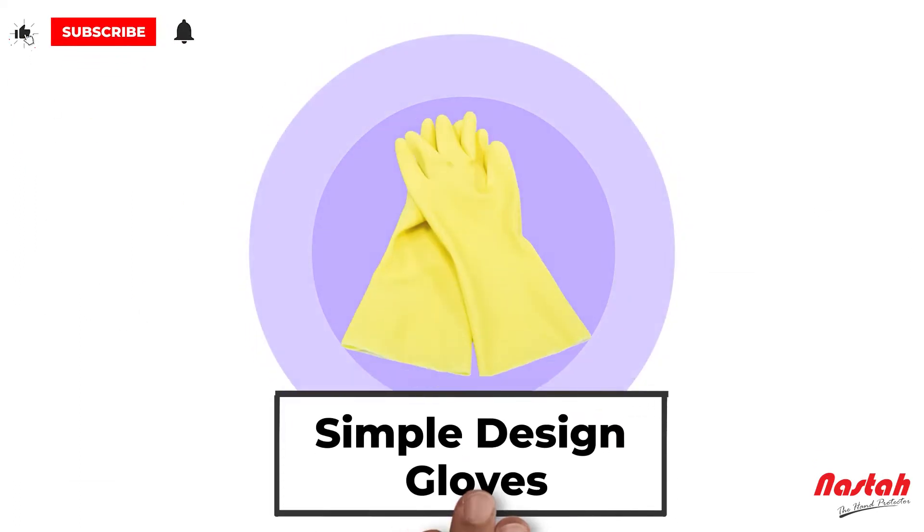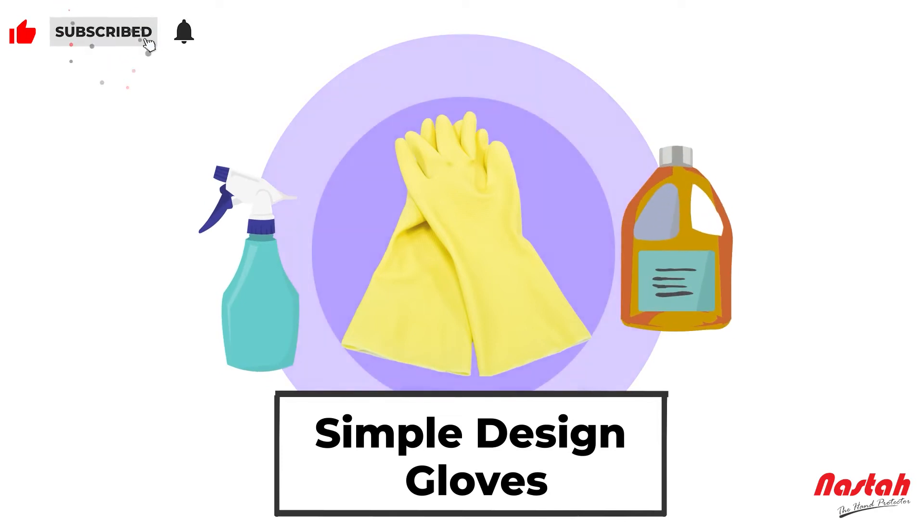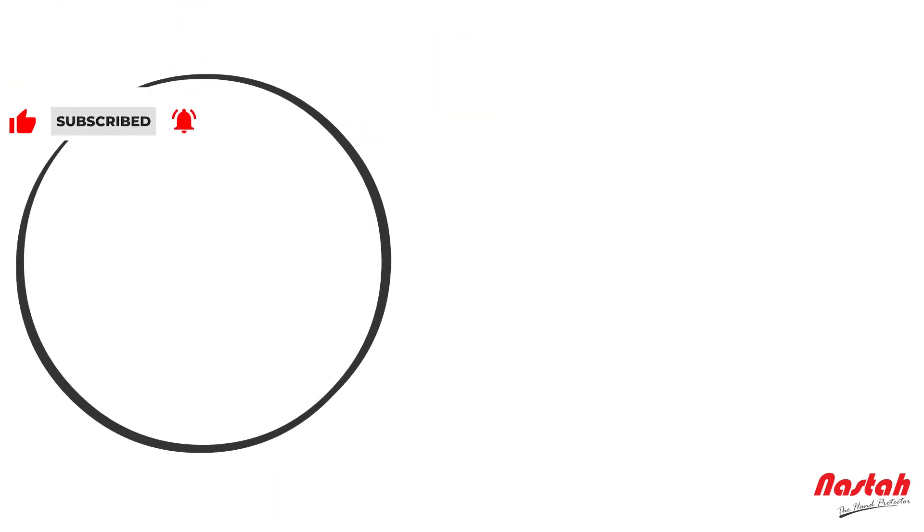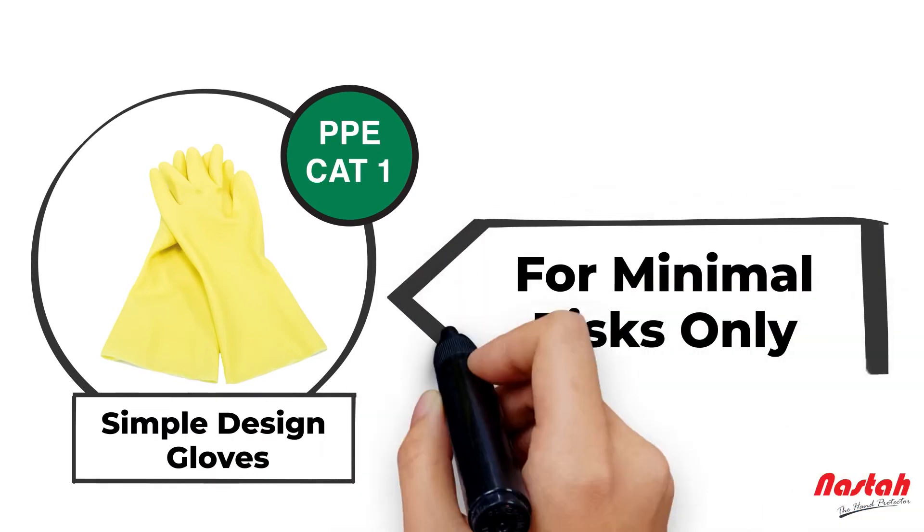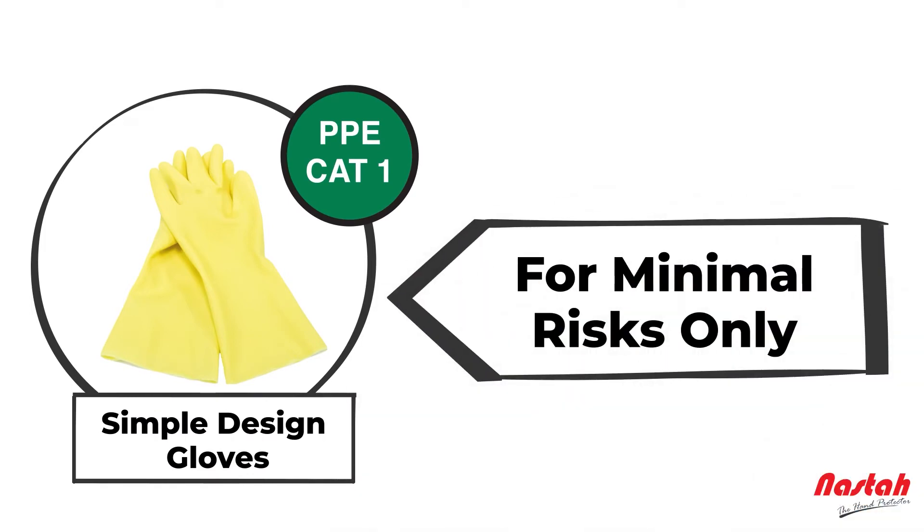Gloves giving protection against diluted detergent solutions are given as an example. Simple design gloves should mention clearly 'for minimal risks only' in at least the official language of the country of destination.